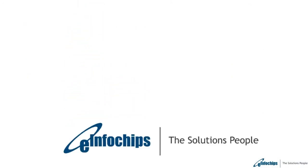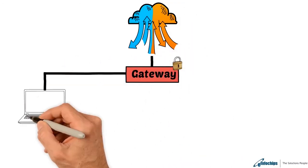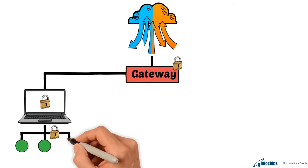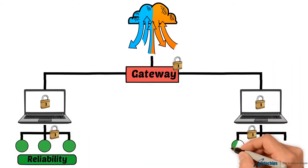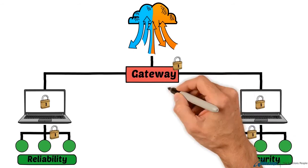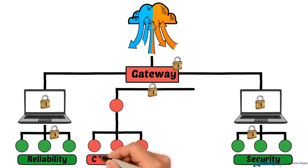eInfochips Intelligent Gateway offering helps you accelerate your time to market by providing a ready-to-use edge device or gateway software stack that is not only intelligent but can also be deployed on any hardware. It can be controlled from the cloud and is incredibly easy to integrate with your existing framework.